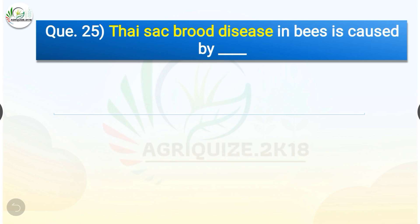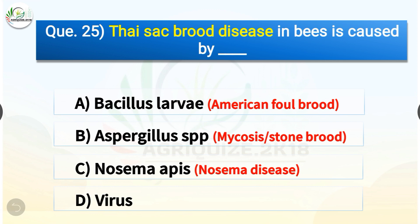Question number twenty-five: Thai sacbrood disease in bees is caused by which of the following? The options are: Bacillus larvae, Aspergillus species, Nosema apis, or virus. The correct answer is option D — virus. Thai sacbrood disease in bees is caused by virus. American foulbrood is caused by Bacillus larvae; mycosis or stone brood is caused by Aspergillus species; and Nosema disease is caused by Nosema apis.